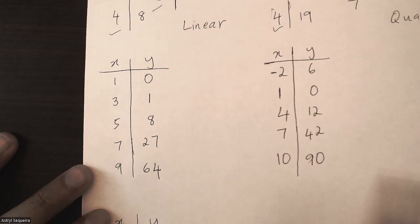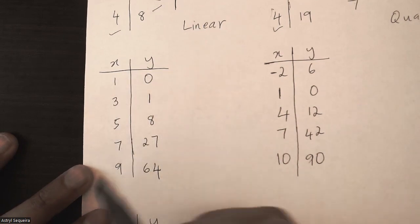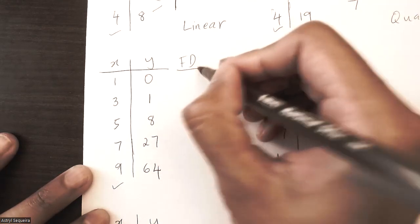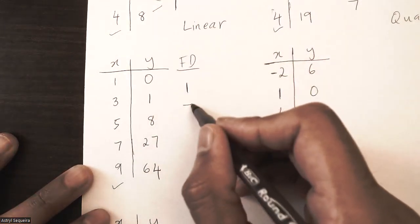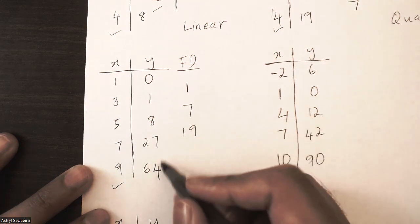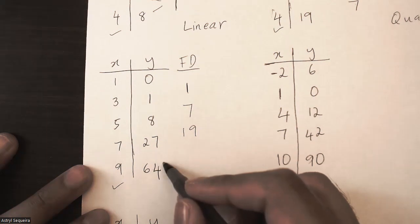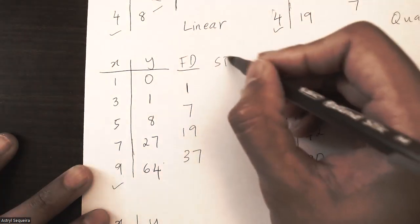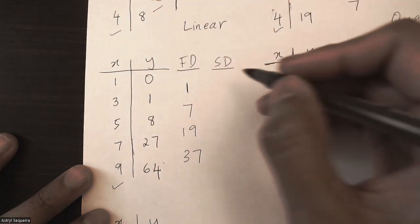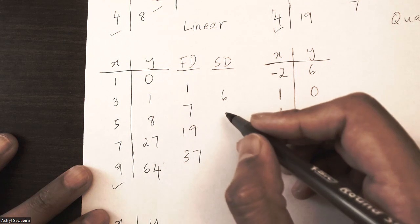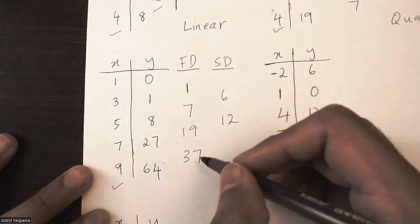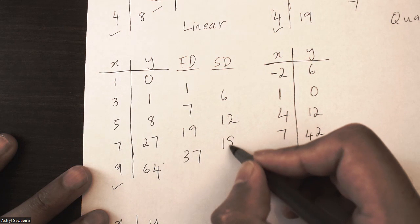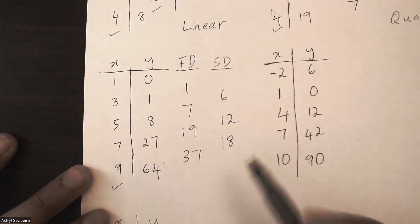For the third example, my x values all increase by 2, so my check is good. First differences: 1 minus 0 is 1, 8 minus 1 is 7, 27 minus 8 is 19, and 64 minus 27 is 37. Those are not the same, so I'll do my second differences: 7 minus 1 is 6, 19 minus 7 is 12, and 37 minus 19 is 18.